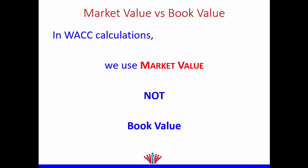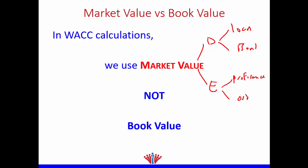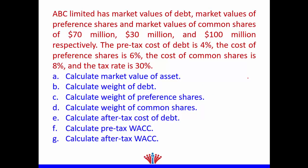When we calculate WACC, weighted average cost of capital, we use the market value, not book value. Therefore we will use the market value of debt and the market value of equity. Debt could be loans or bonds, while equity could be preference shares or ordinary shares. Ordinary shares are also called common shares and preference shares are also called preferred shares. Depending on the company you analyze, we could have all four of them.